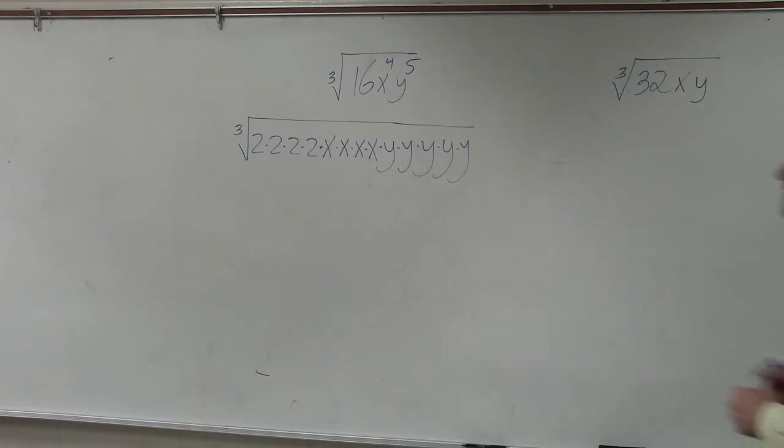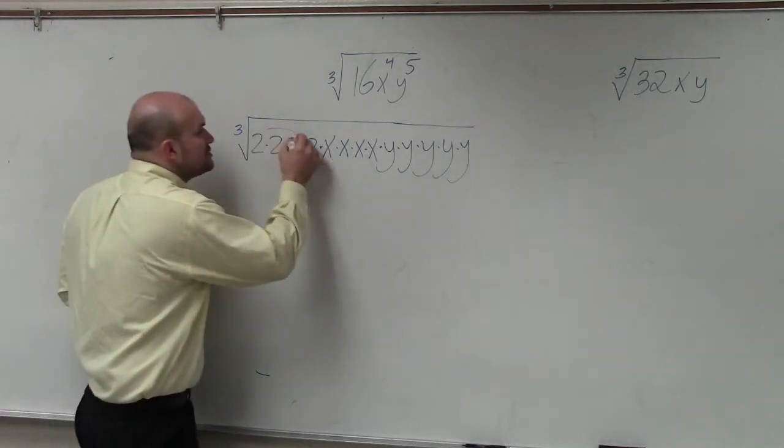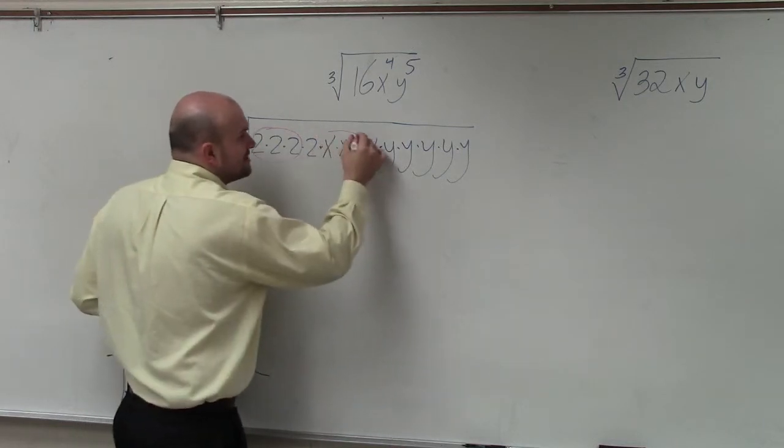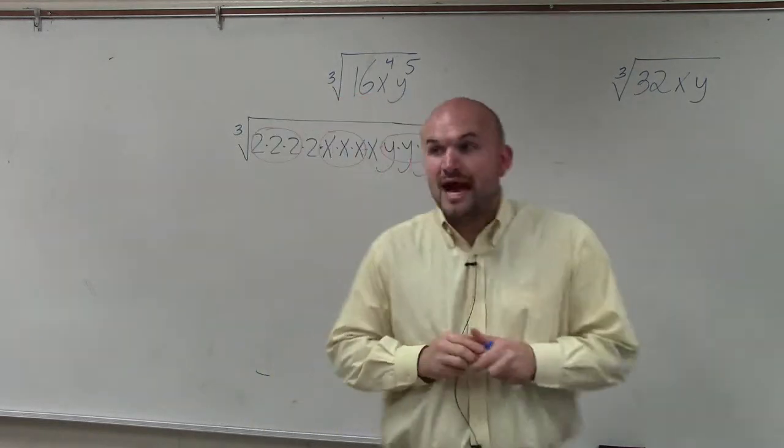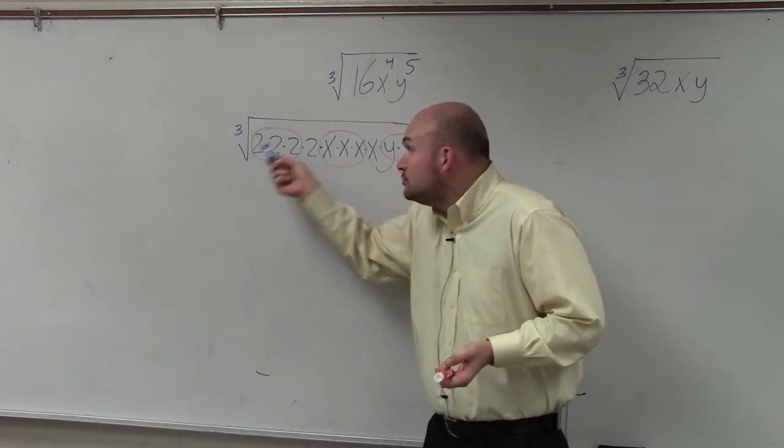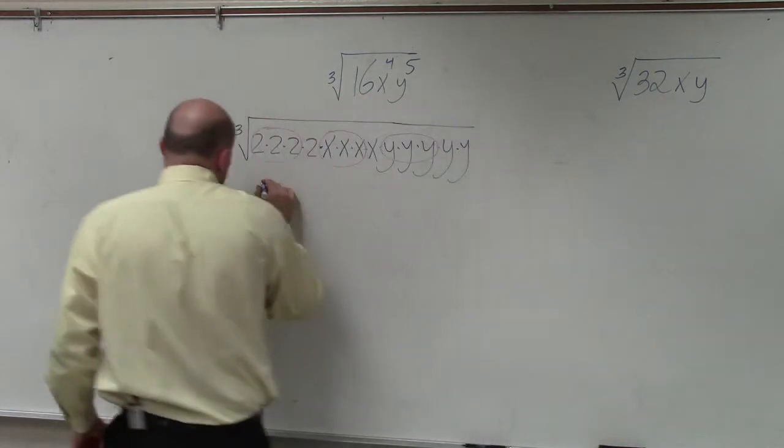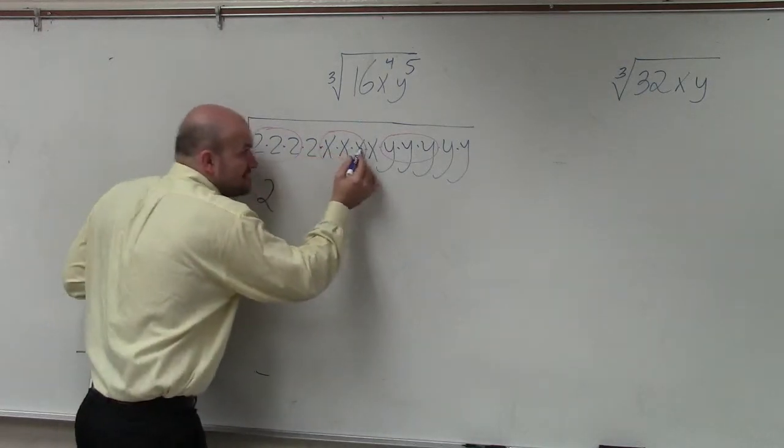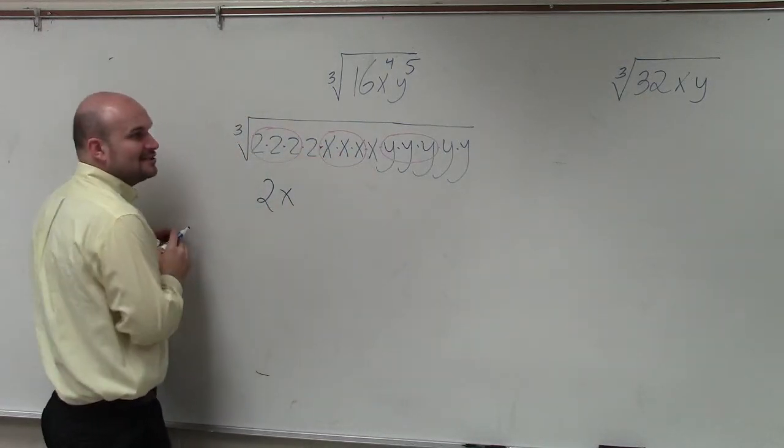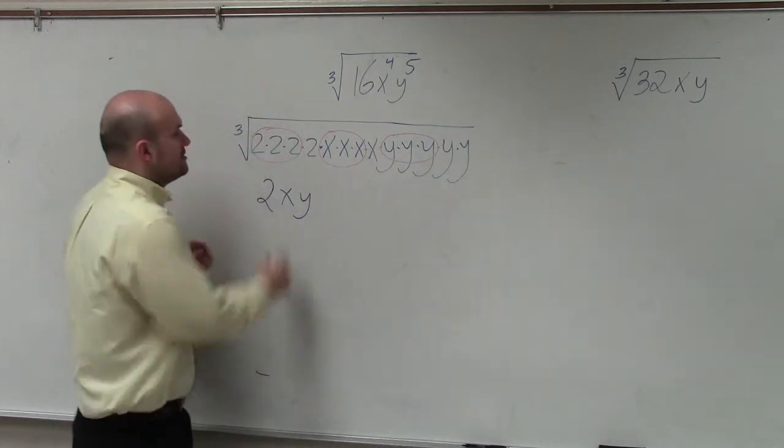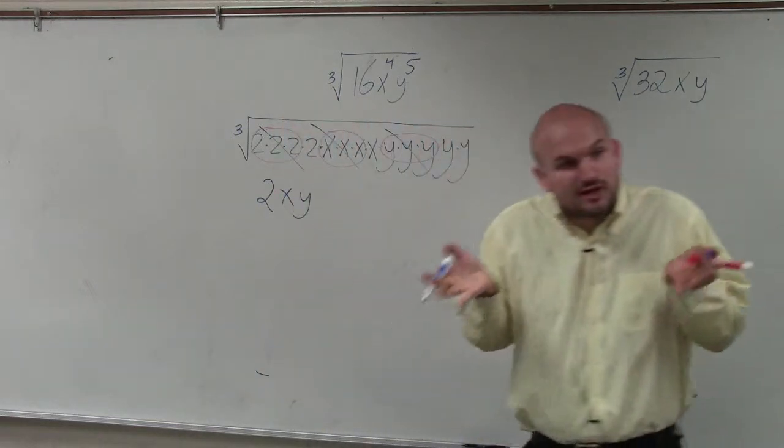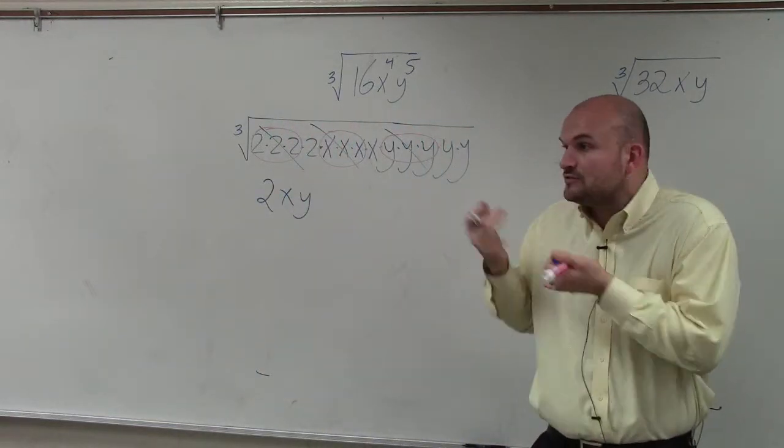So what the cube root says is what number multiplied by itself three times. So now you just circle groups of numbers that are multiplied by themselves three times. The cube root of 2 times 2 times 2 is equal to 2. The cube root of x times x times x is equal to x. The cube root of y times y times y is y. So you can take the cube root of numbers multiplied by themselves three times.